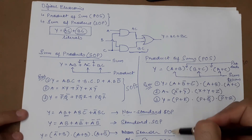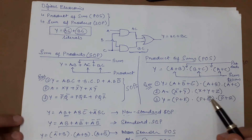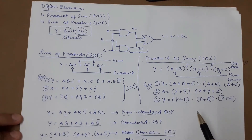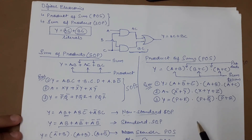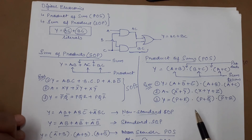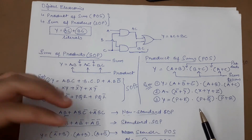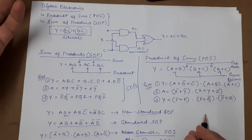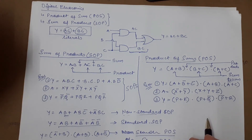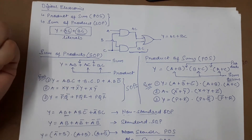In the next lecture, we are going to learn about the maxterm and minterm, and after that we will go into the techniques of the K-map, or Boolean equation simplification, and the different techniques involved. If you learned something from this video, please like and share, and subscribe to the channel for more such videos.